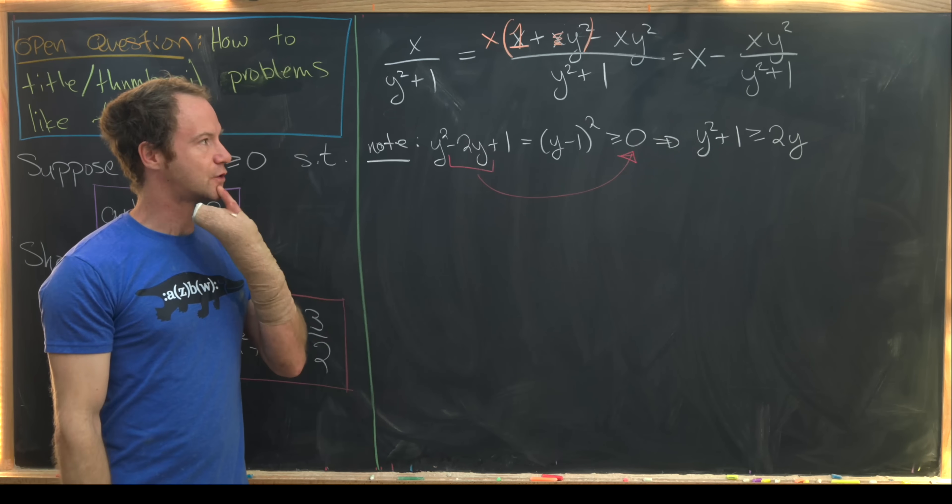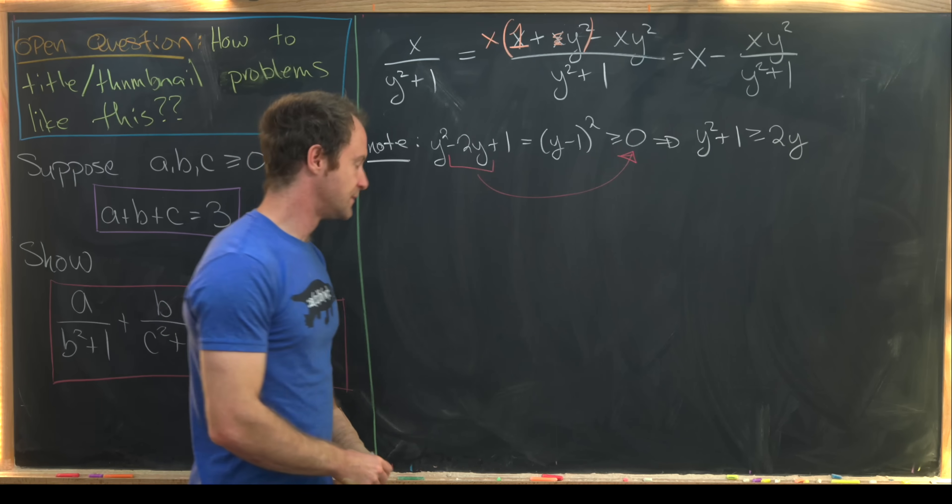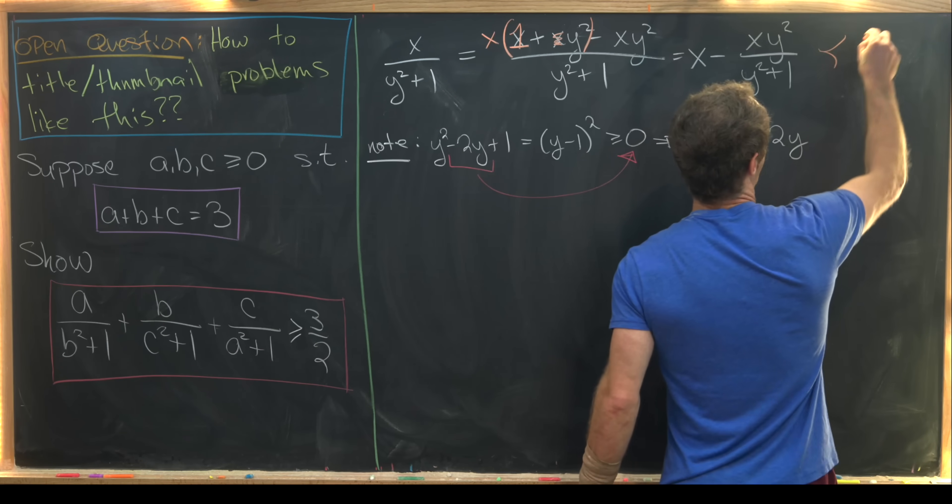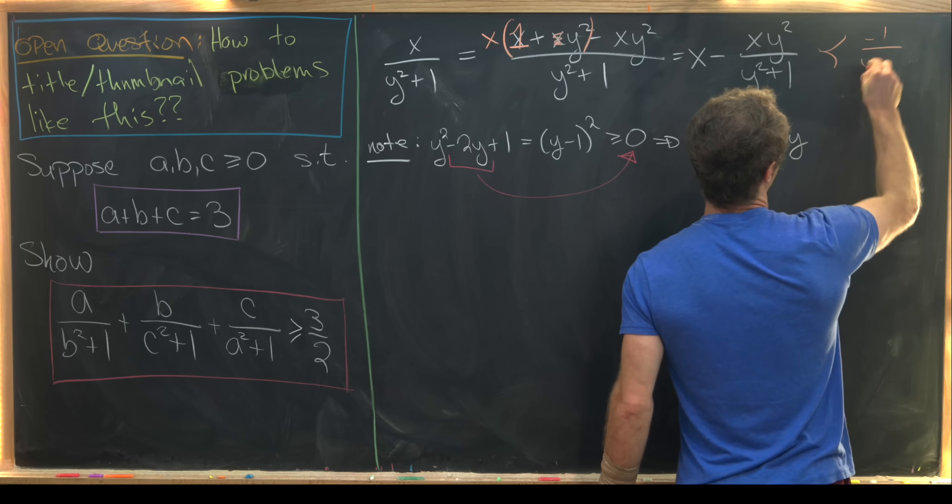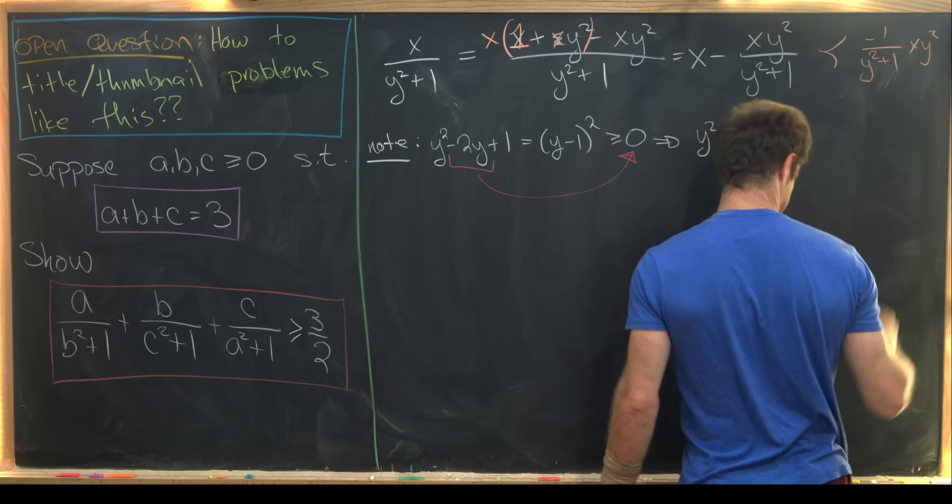Okay, well that's cool, but notice we don't exactly have a y squared plus 1. We have a minus 1 over y squared plus 1 times an xy squared.